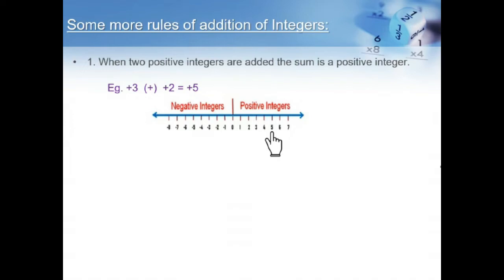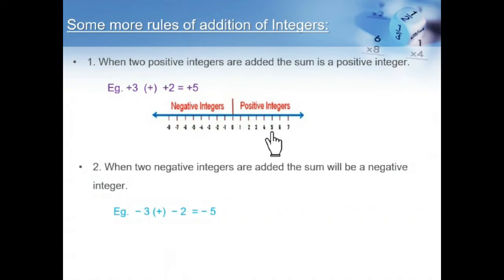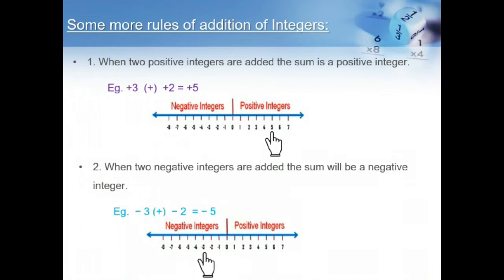The second rule: when two negative integers are added, the sum will be a negative integer. Example: minus 3 plus of minus 2 is equal to minus 5.